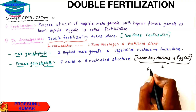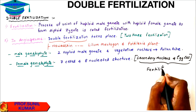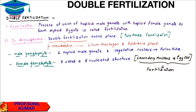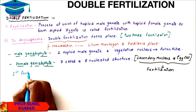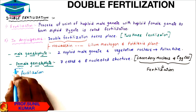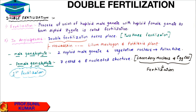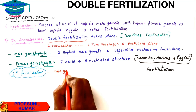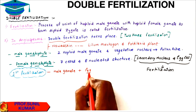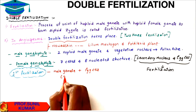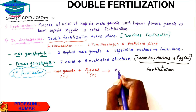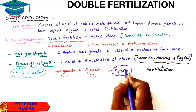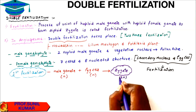First let us understand what exactly is first fertilization. First fertilization is the haploid male gamete fusing with the egg cell. The male gamete and the egg cell, both haploid, form together a diploid zygote, and this zygote develops into the embryo.